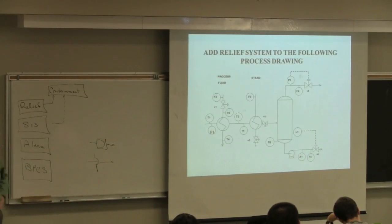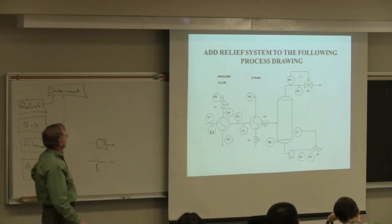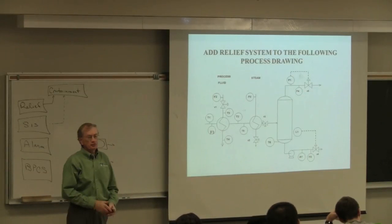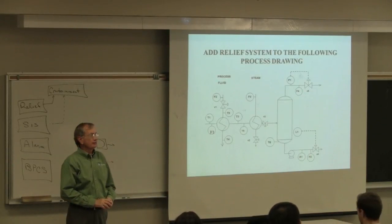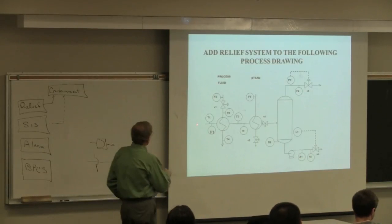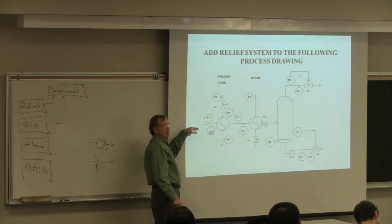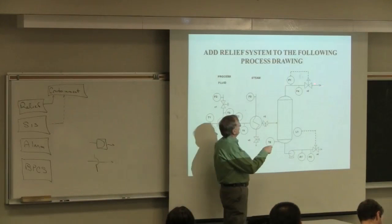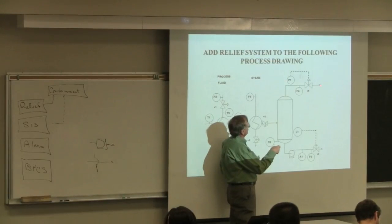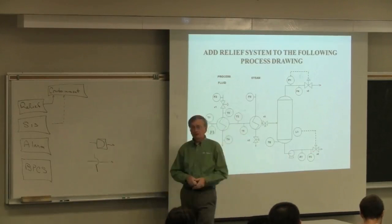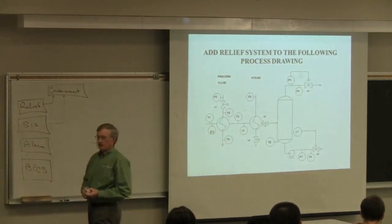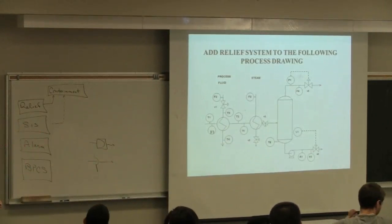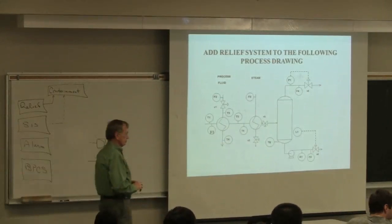Let's go through some examples. Where do we put a safety valve or rupture disk, and which one? This process has ethane, propane, butane, and pentane coming in; overhead product is methane and a little ethane, with the rest out the bottom. Talk to your friends for 30 seconds and discuss where to put the device and which of the two to use.